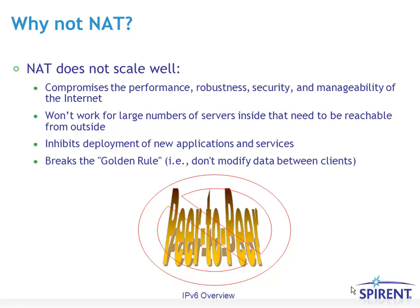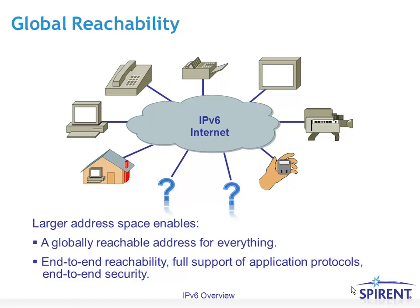One of the big issues with IPv4 is network address translation, which is the main strategy used to extend the useful life of IPv4. But the biggest problem with NAT is that it breaks the golden rule — it modifies data between clients. For true peer-to-peer applications, you need a protocol that scales like IPv6, with enough addresses to assign a public IPv6 address to every interface, enabling global reachability for every type of device — from a refrigerator to a light switch to a server.